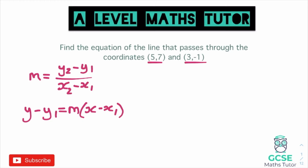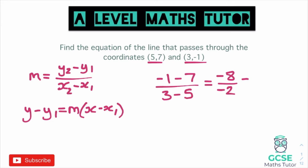To find our gradient we do y₂ minus y₁ over x₂ minus x₁, which is −1 minus 7 over 3 minus 5. On the top that comes out as −8 and the bottom comes out as −2, so we have a gradient of 4.